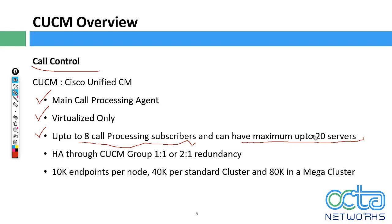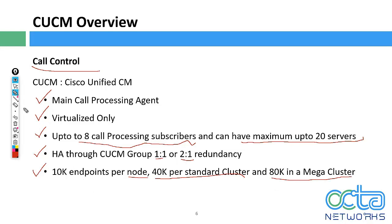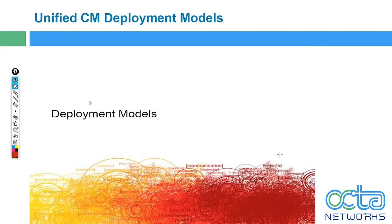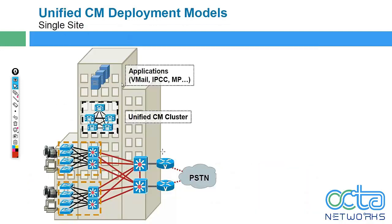So you can see there are many servers part of this cluster beyond just the eight call processing servers, up to a maximum of 20 servers total. High availability and redundancy is available in the form of one-to-one or two-to-one ratios. Each node supports 10,000 endpoints, meaning 40,000 per standard cluster. If you need more, you can have a mega cluster supporting up to 80,000 phones.